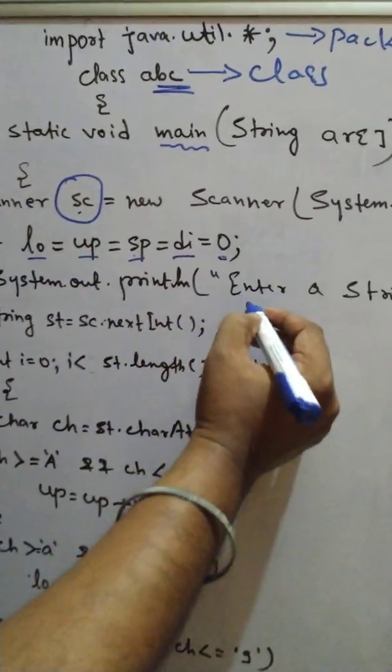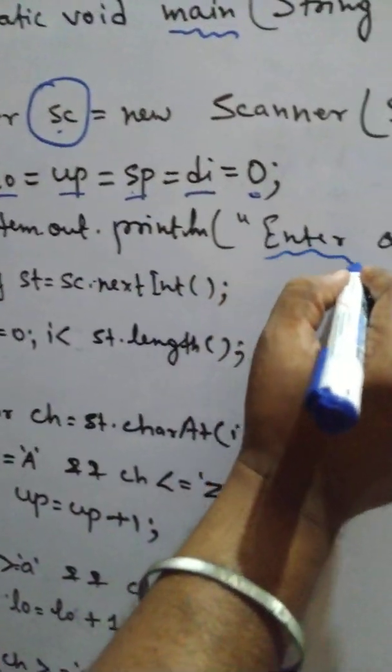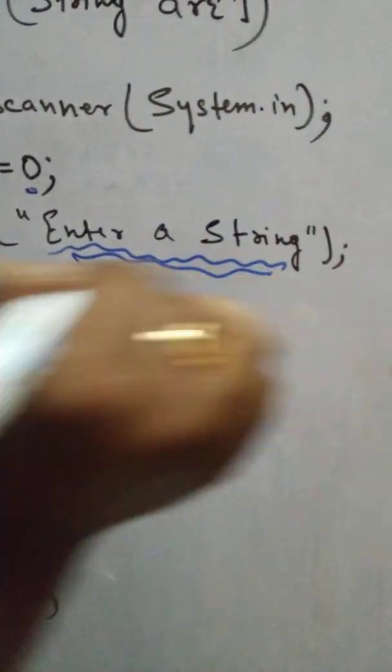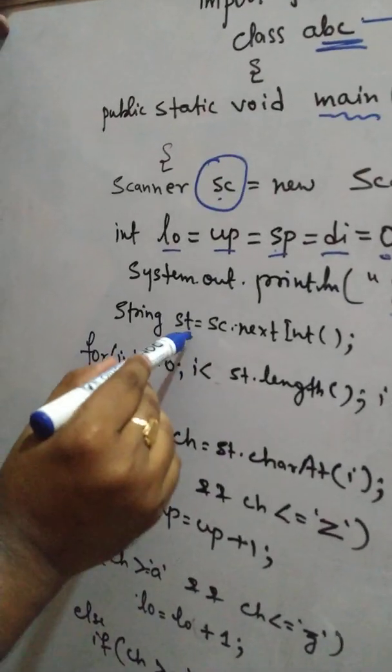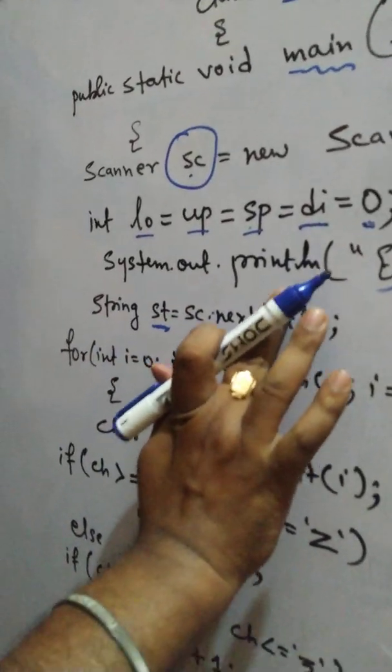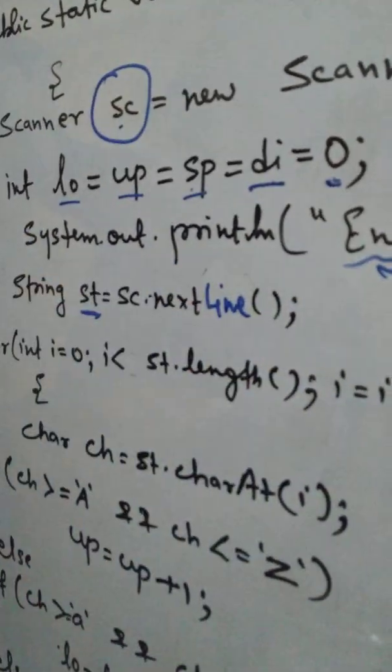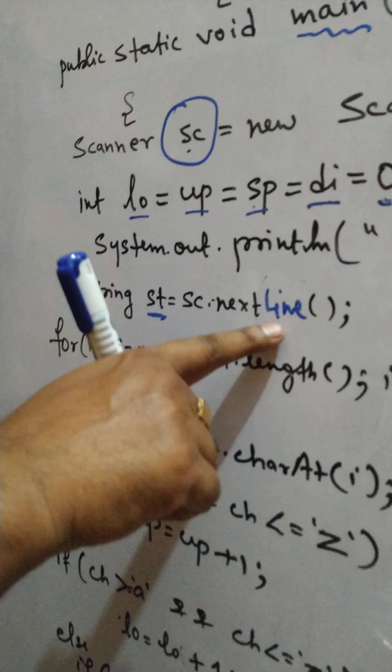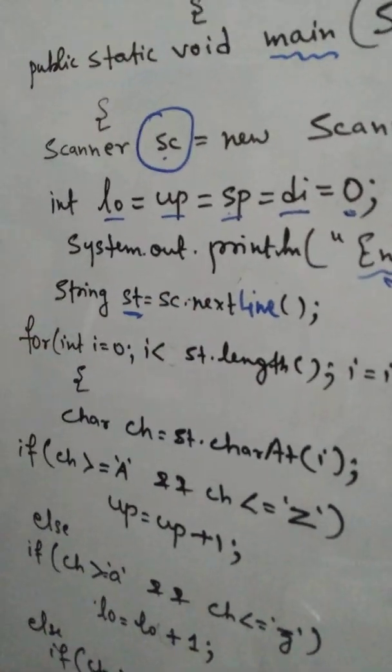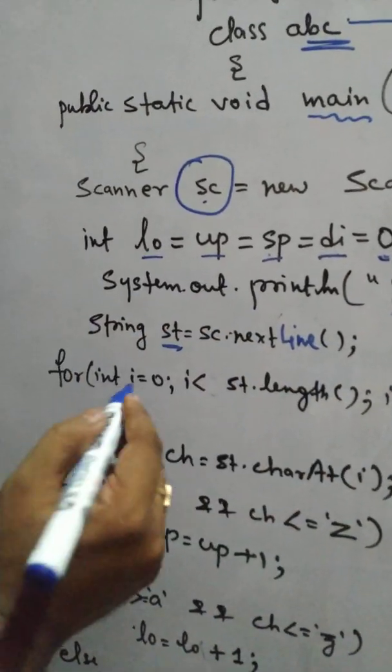Then I mentioned one message, enter a string. As string, I have to input. The string name is st. st equals to next line. Next line. Next int for integer. But next line for string input. So st equals to sc.next line.